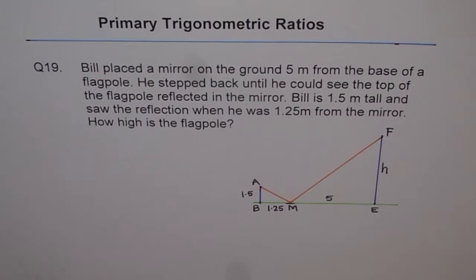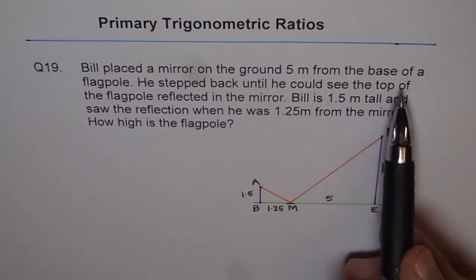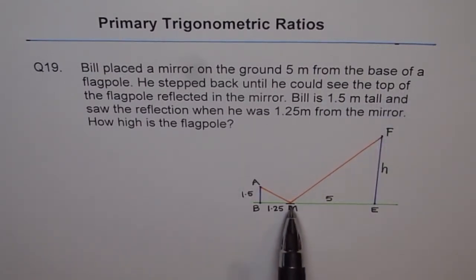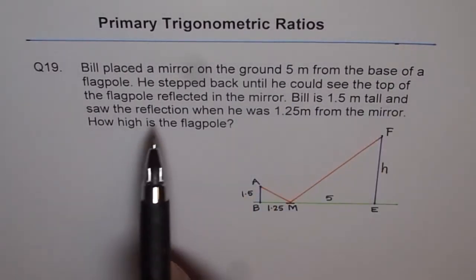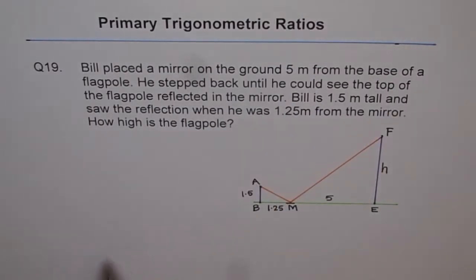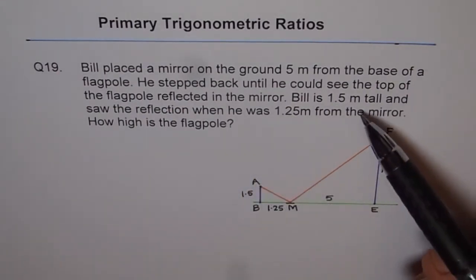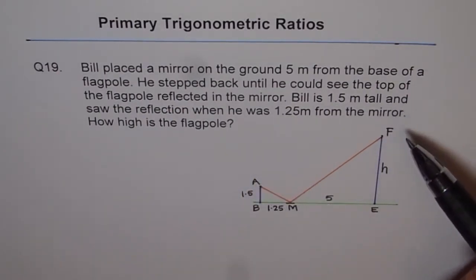Bill placed a mirror on the ground 5 meters from the base of a flagpole. He stepped back until he could see the top of the flagpole reflected in the mirror. Bill is 1.5 meters tall and saw the reflection when he was 1.25 meters from the mirror. How high is the flagpole?